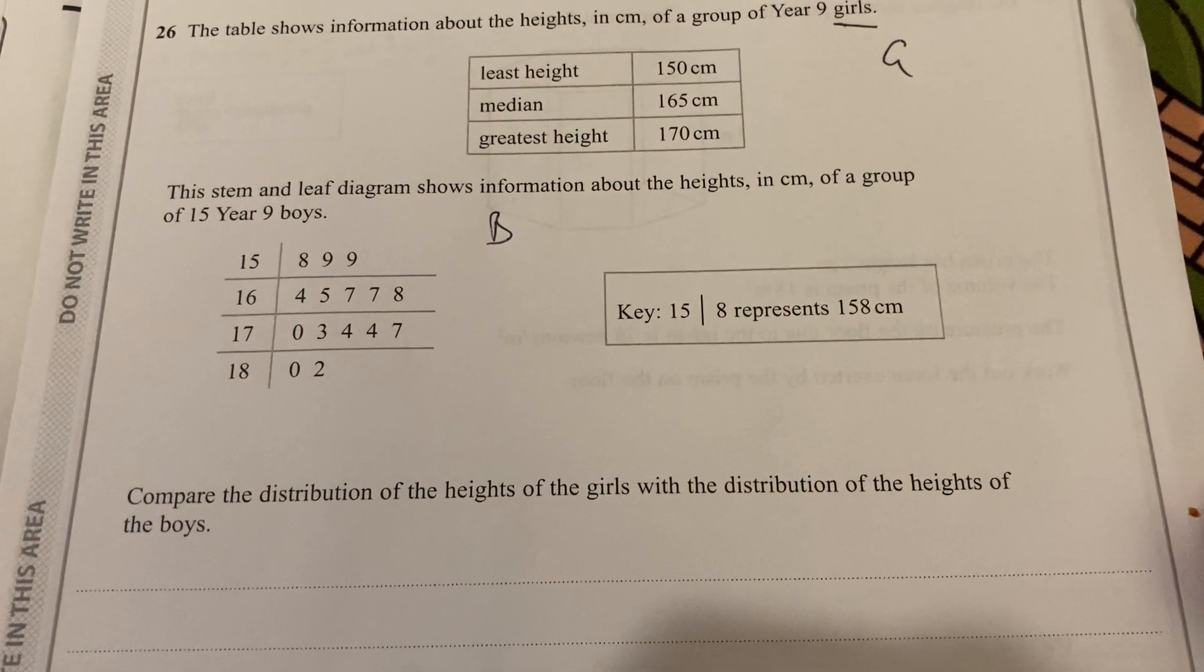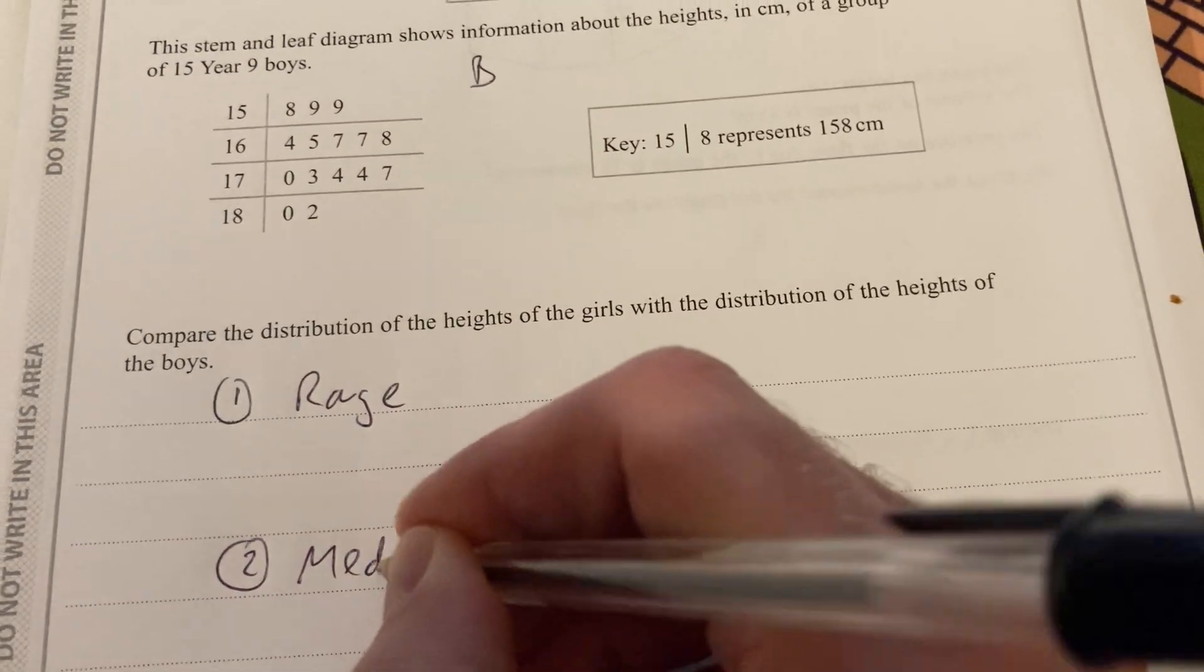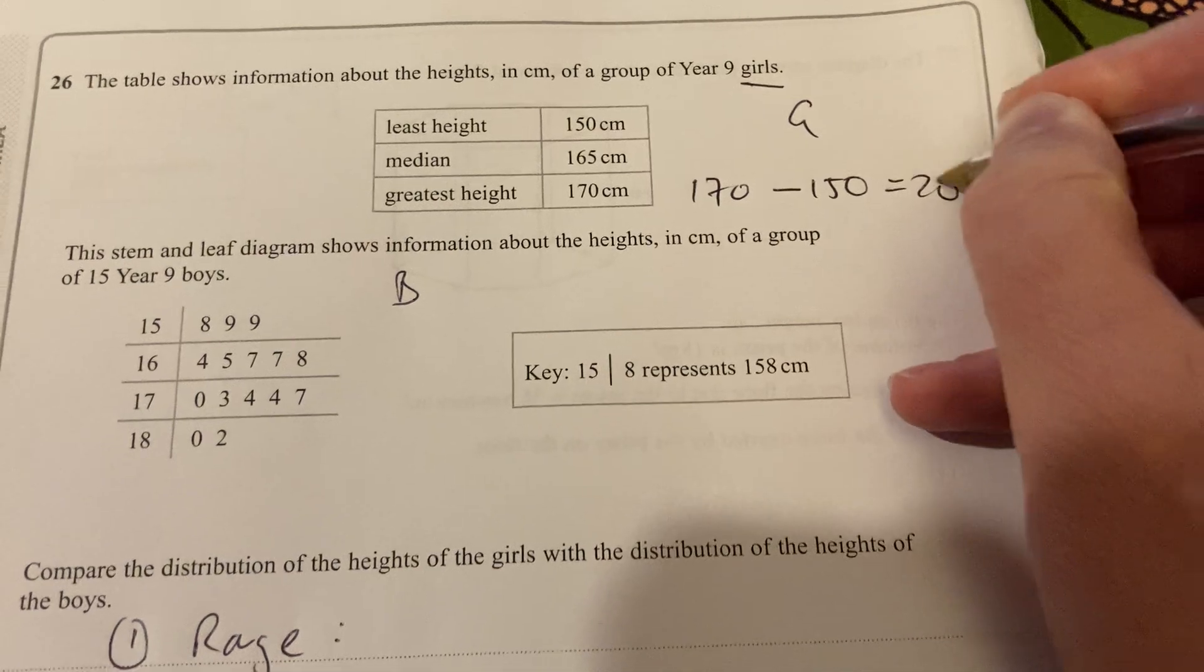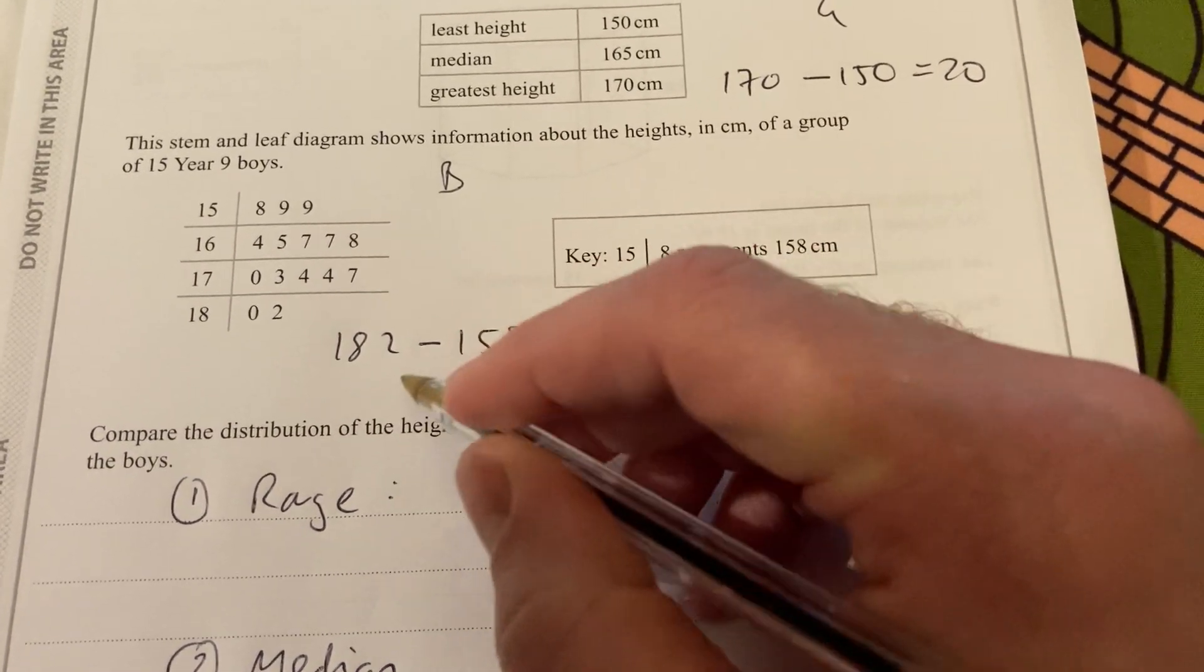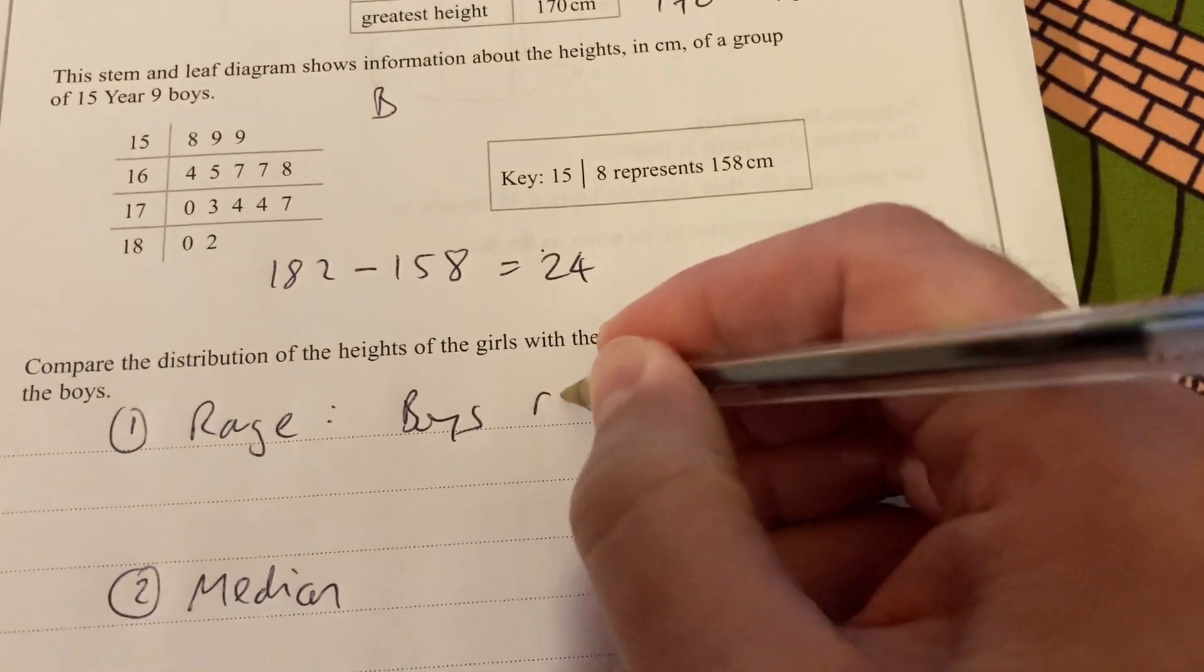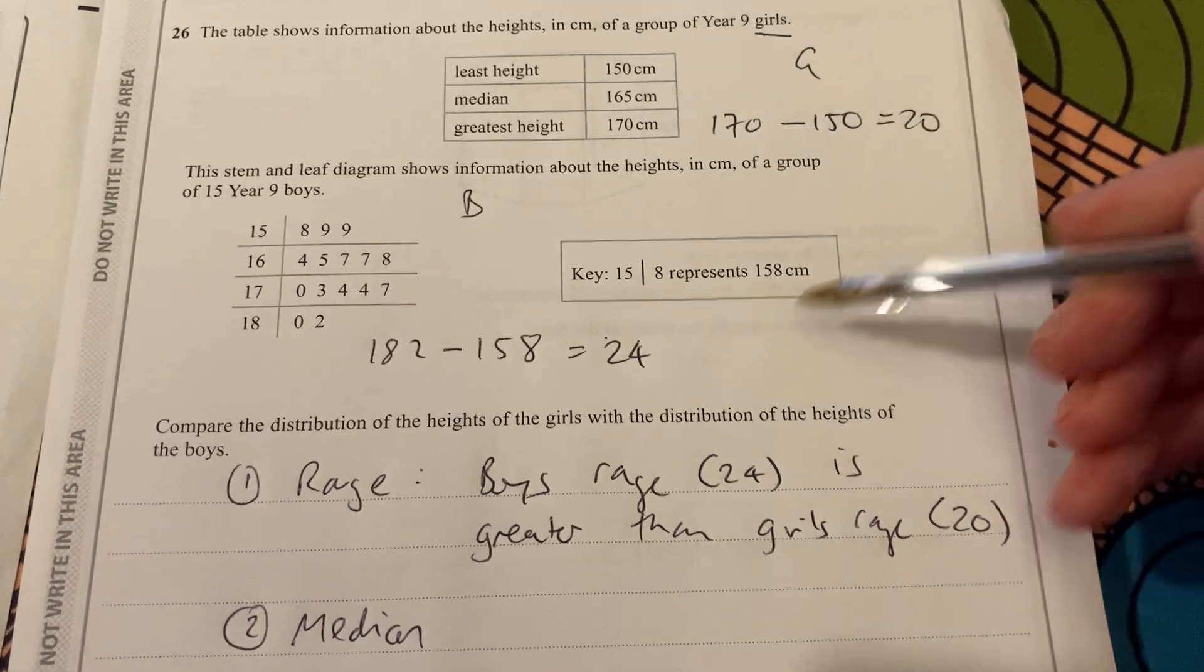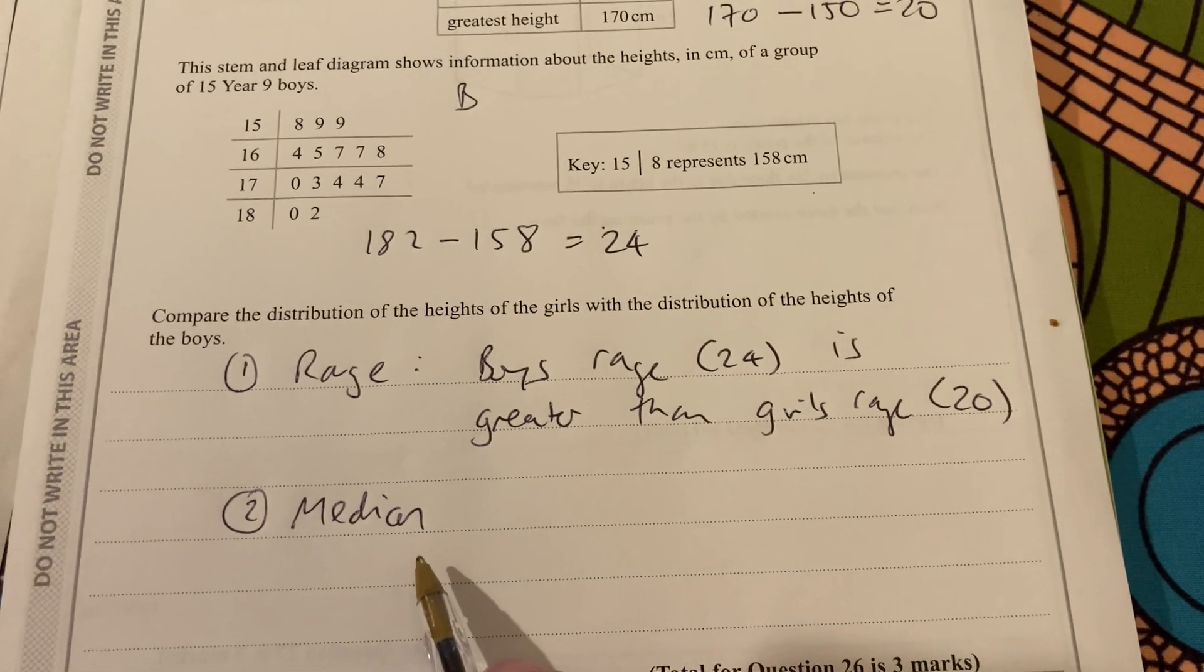Now, that's a table. But for the boys, they've done a stem and leaf. So different ways of representing the data or collecting the data. And there are 15 year nine boys. That's the stem. Those are the leaves. And they've got a key here so that 15 slash 8 is 158. And we're going to compare the distributions of the girls with the boys. Things to do here are to compare. One, the range. And two, the median. And if you compare those two, you will get all the points. So the range is the greatest minus the least. So the girls have a range of 170 minus 150, which is 20. The boys have a range of 182 minus 158, which is...